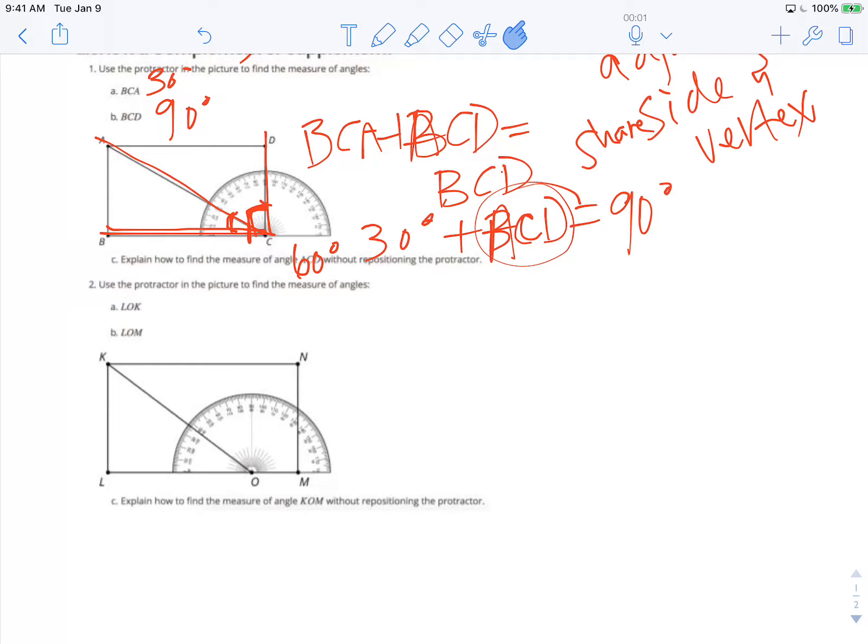All right, let's look at number two. It says, use the protractor in the picture to find the measure of the angles LOK and LOM. LOK is right here, and LOM. Well, LOM is the easier of the two because it's that straight angle. We know that straight angles measure 180 degrees.